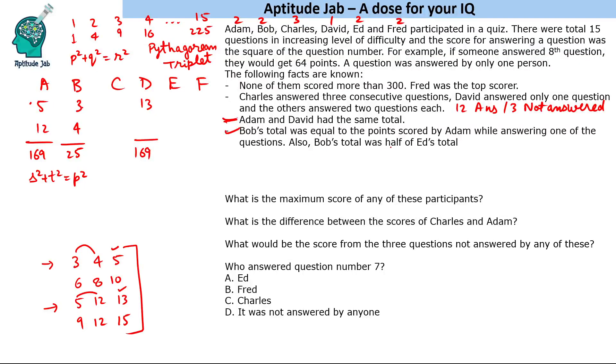Ed's total will be 50. How is 50 possible with square numbers? 1² + 7² = 1 + 49 = 50. That is the only possibility, so Ed answered questions 1 and 7, getting a total of 50.